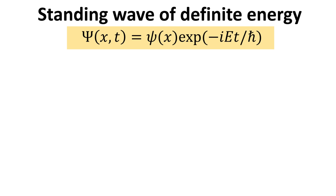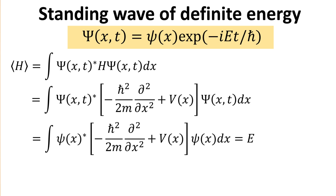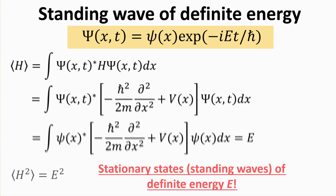Now we know why these states obtained from the method of separation of variables are called stationary states. Each stationary state is also associated with the constant E, which has the dimension of energy. We show that E is in fact the expectation value of the Hamiltonian H. Since H is time-independent, the exponential time-phase factor drops off when multiplied by its complex conjugate. It is also straightforward to show that the expectation value of H squared is simply E squared, which implies that the energy of the state is definite — there is no spread in energy. Thus, the stationary states are also states of definite energy E.